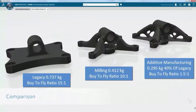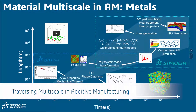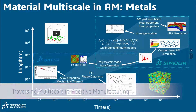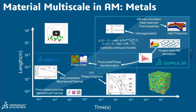The idea is that we can take information from the lower scales — from atomistic-type simulations and from phase-scale simulations, as shown here on the lower part of the graph. We can leverage that into calibrating continuum models, as shown by the equations in the center, so that they can be used effectively at the continuum scale, finite element scale, and part-level simulations.